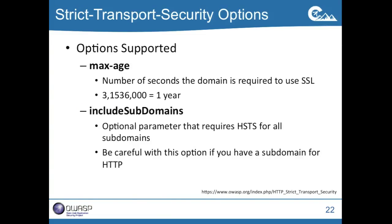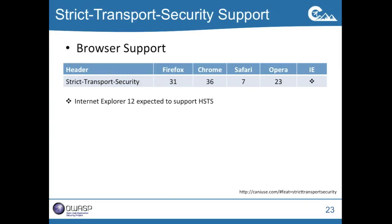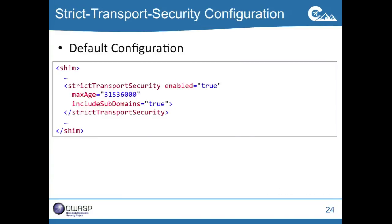We have some options: max-age and include-subdomains. When I said it covers the entire domain, it does, but it doesn't necessarily include subs. If you have www-dot and static-dot, and you don't include subdomains, then static won't be covered unless you specifically say so. Pretty good browser support — sometime after IE12 it's supposed to maybe be supported in IE, but nobody uses IE. Default configuration: strict transport security is enabled, the max-age is a year, and it includes the subdomains, covering your entire domain and everybody underneath it.